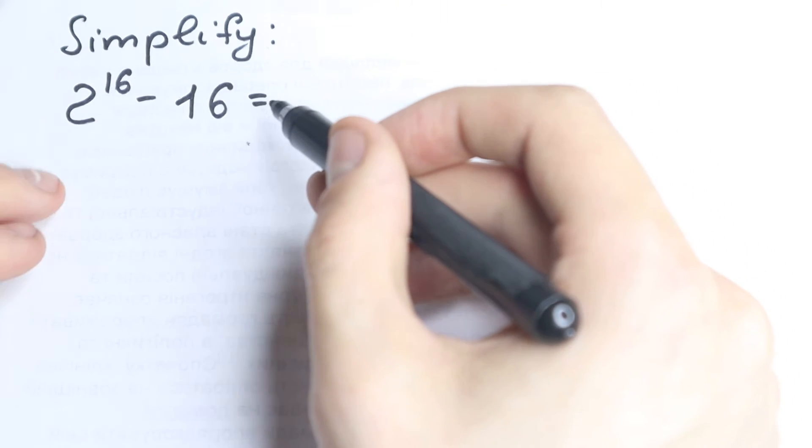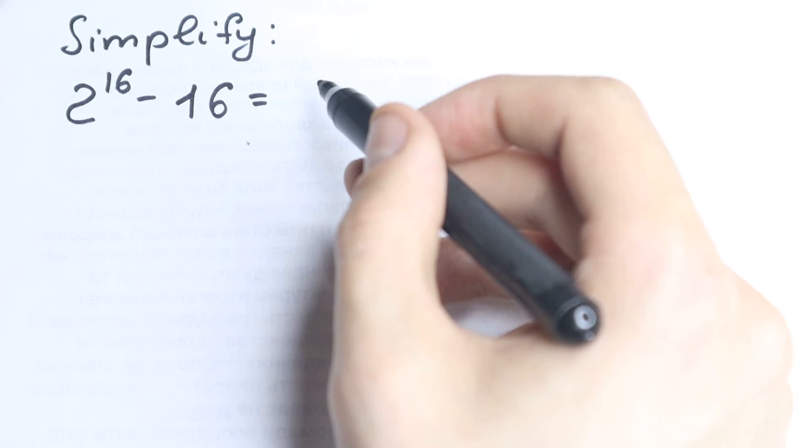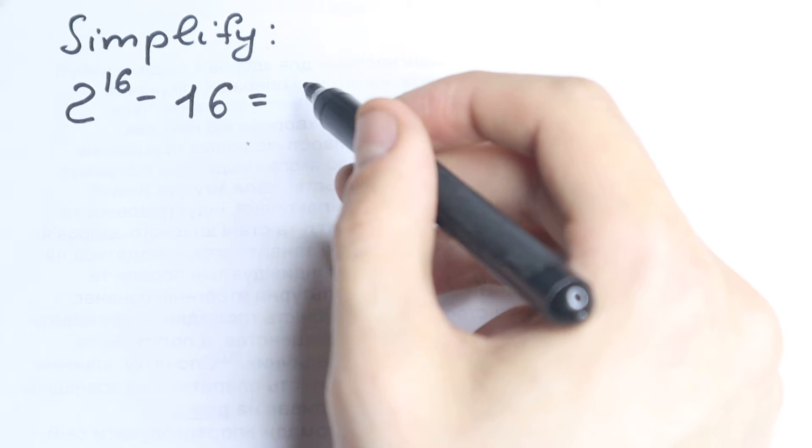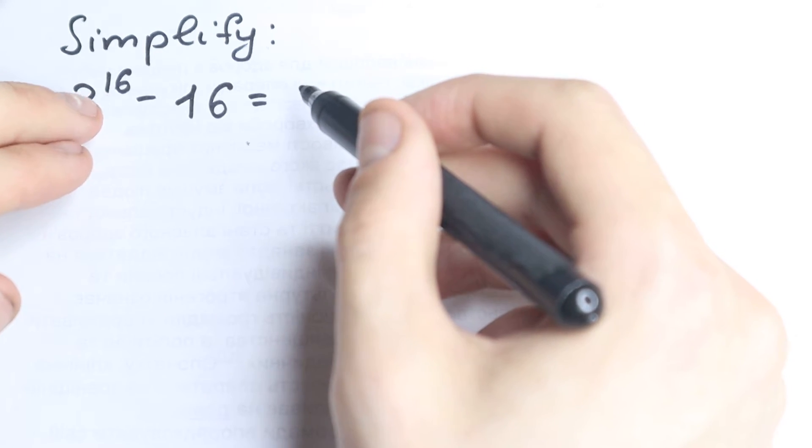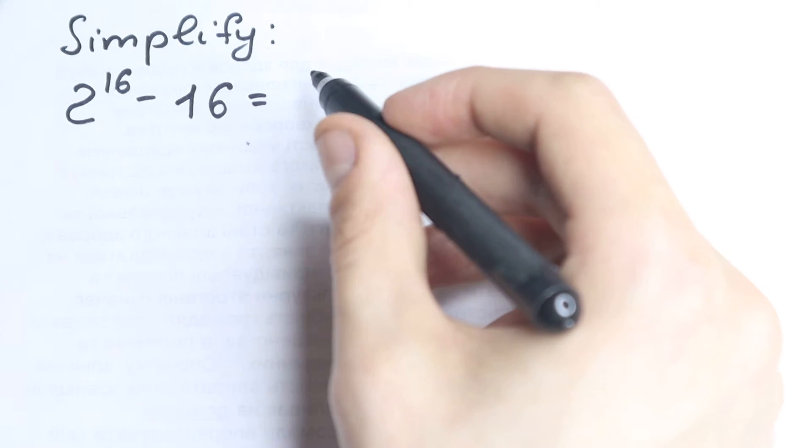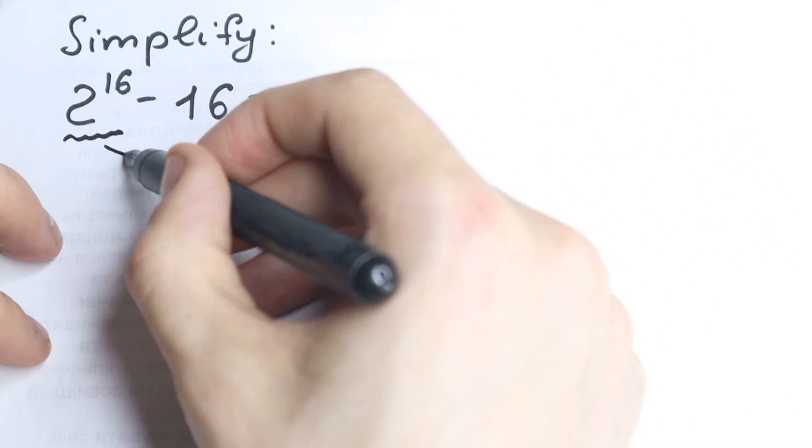First of all, we have different bases: 2 and 16. We cannot simplify this with the bases. We need to know about identity formula. We have 16 with first power. Let's try to create difference of squares. We have subtraction, so let's try to create difference of squares. For this we need to create square from this one.